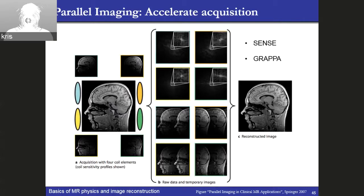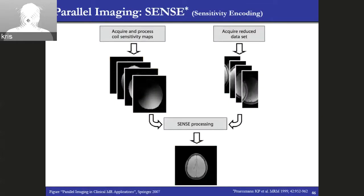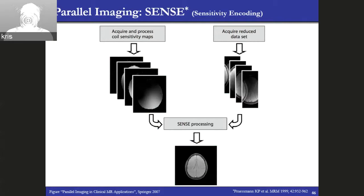There are two standard popular ways to achieve acceleration with parallel imaging. One is called SENSE, which operates in image space, and the other is GRAPPA, which is formulated in k-space. For SENSE, we need two ingredients: the coil sensitivity maps, which in practice can be estimated from low-resolution information; and the aliased image for every coil. Putting that information together with the coil sensitivity maps, SENSE produces a fully sampled non-aliased image.